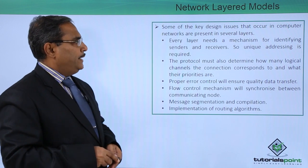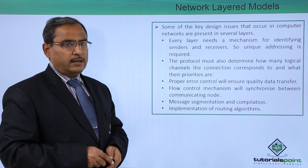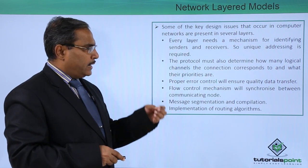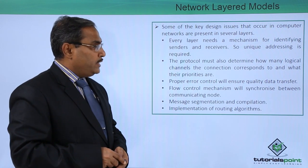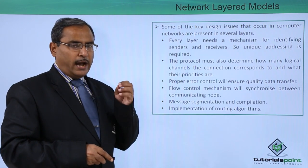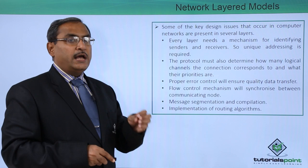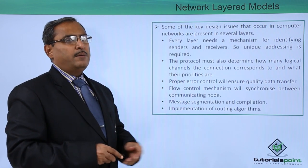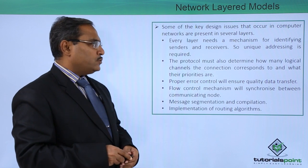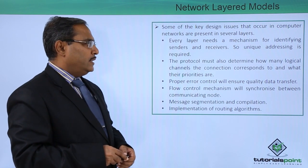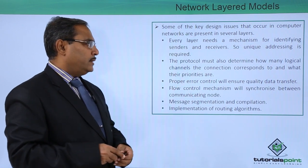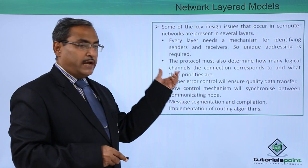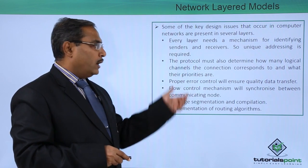Some of the key design issues that occur in computer networks are present in several layers. Every layer needs a mechanism for identifying senders and receivers, so unique addressing is required — each layer must identify who is sending the message and to whom it has to be directed. The protocol must also determine how many logical channels the connection corresponds to and what their respective priorities are.